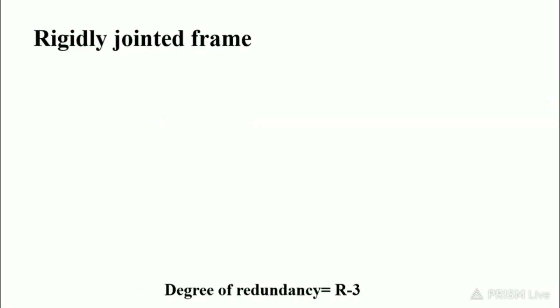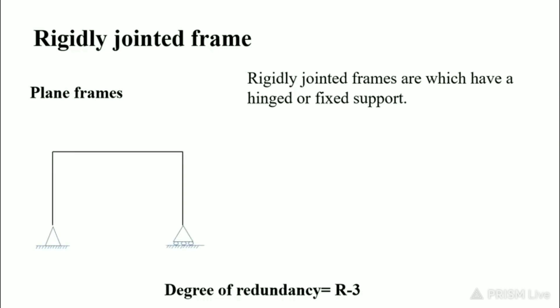Now we discuss rigidly jointed frames — our second topic. We are discussing plane frames only, not multi-storied frames. Rigidly jointed frames are those which have a hinged or a fixed support. This frame has one side fixed, one side hinged, and one side with a roller support.